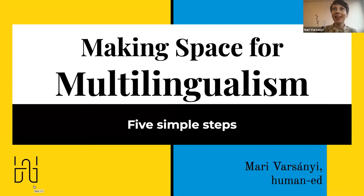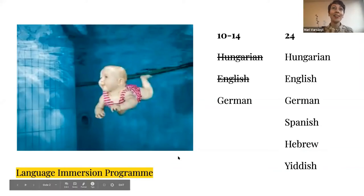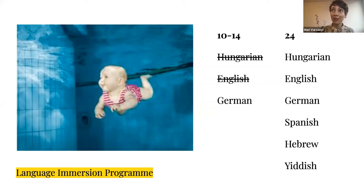Welcome everybody. My name is Mari Varsanyi, and as a teacher I would like to present five simple steps for making space for multilingualism. I was born in Hungary and at age 10 I started attending an Austrian school in Hungary — a bilingual language immersion program where I followed several subjects fully in German. I was struggling to follow the curriculum and felt like a baby thrown into the water not knowing how to swim. Luckily I didn't give up on learning languages and by age 24 I was a happy multilingual speaking or reading six different languages.